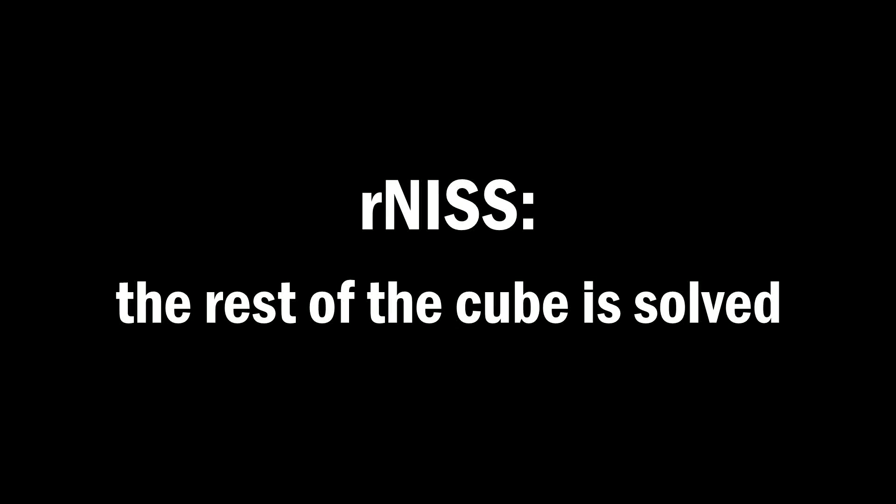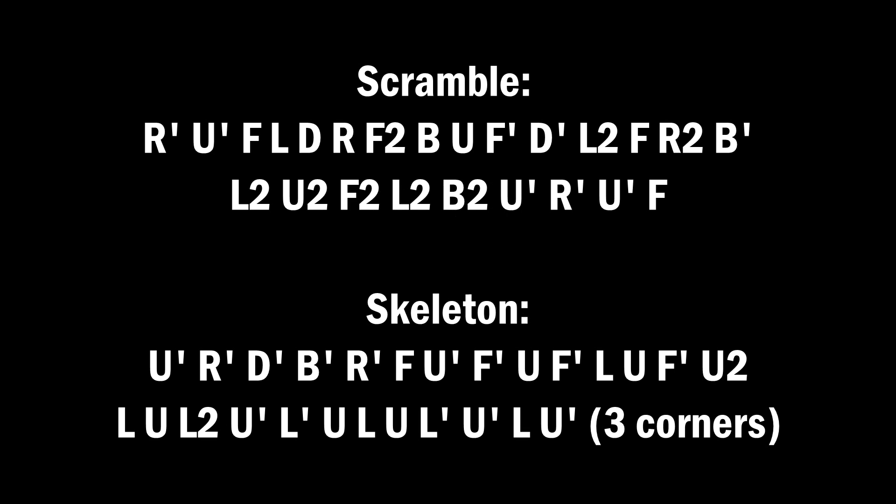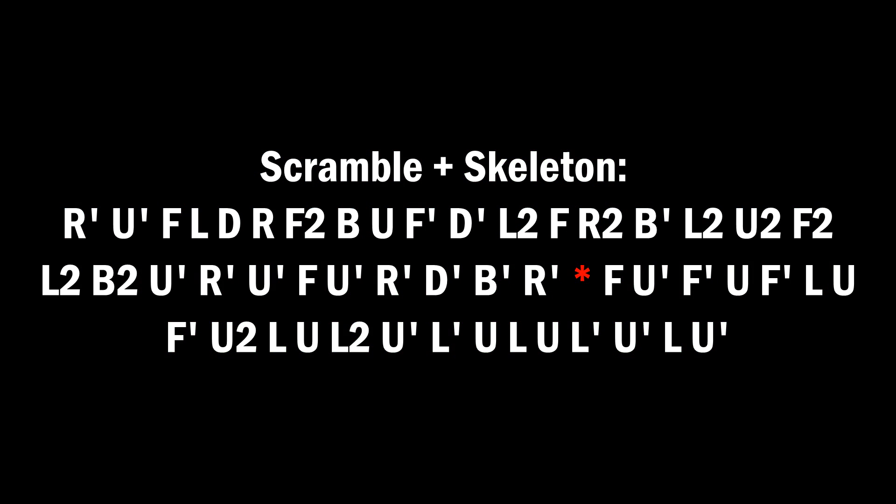But with R-ness, you can see the three cycle with the rest of the cube still being solved. So how R-ness works is we have the scramble and skeleton as one long sequence, and I'm looking at a specific spot.